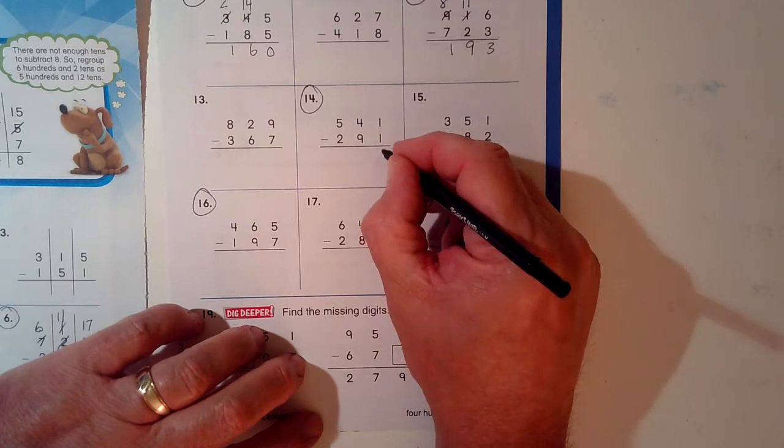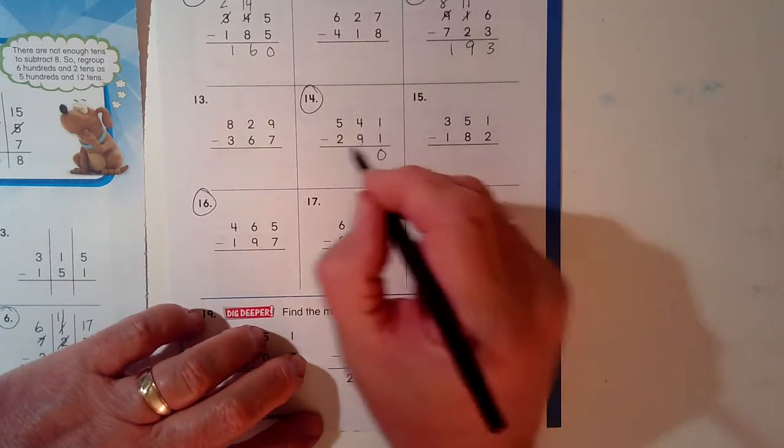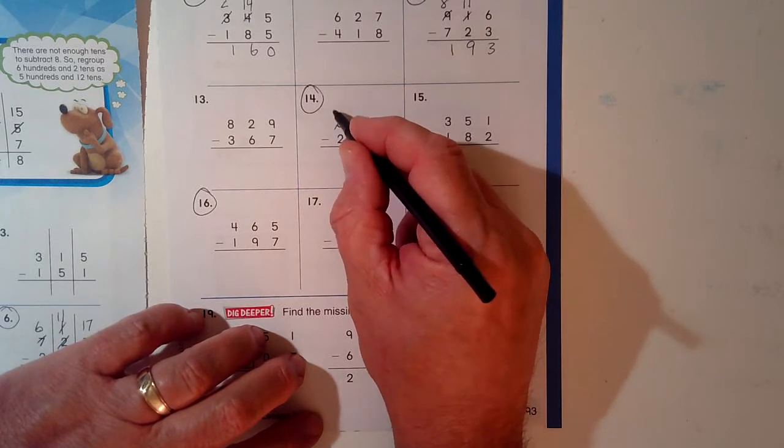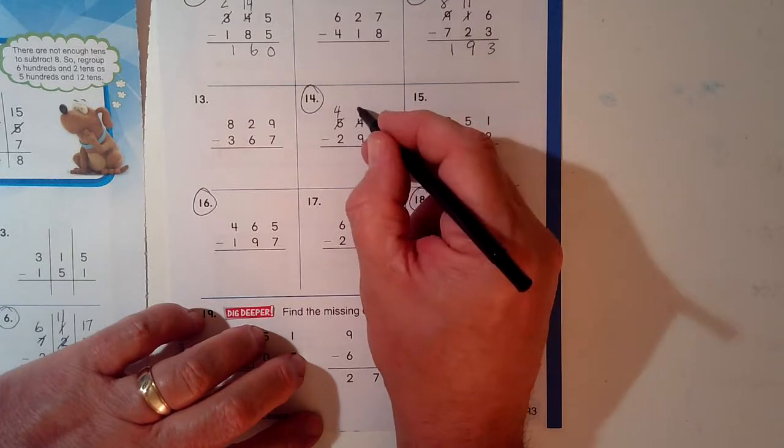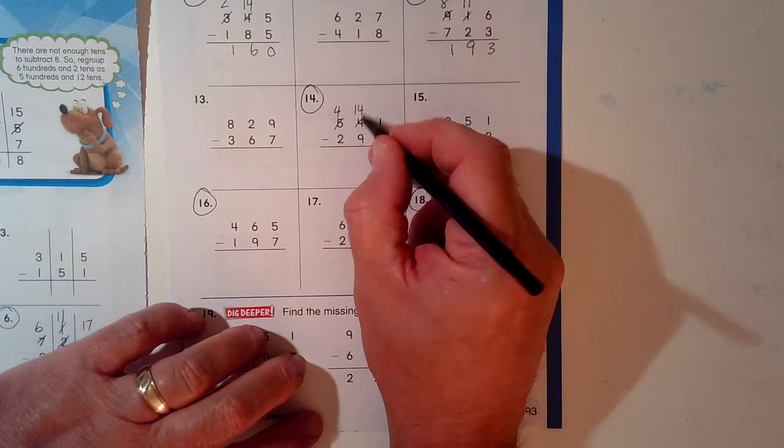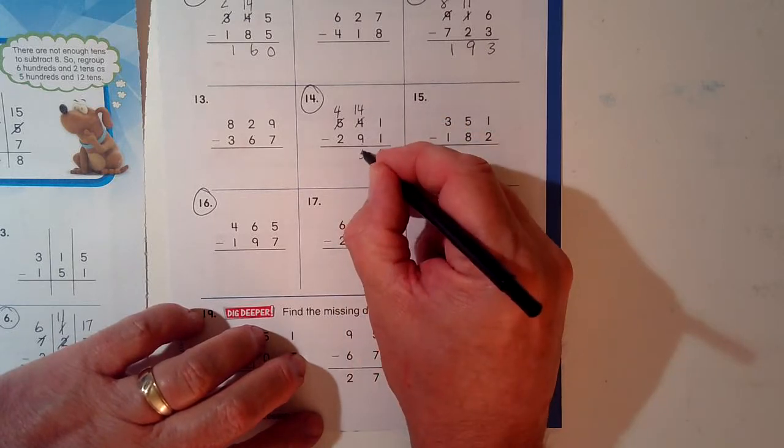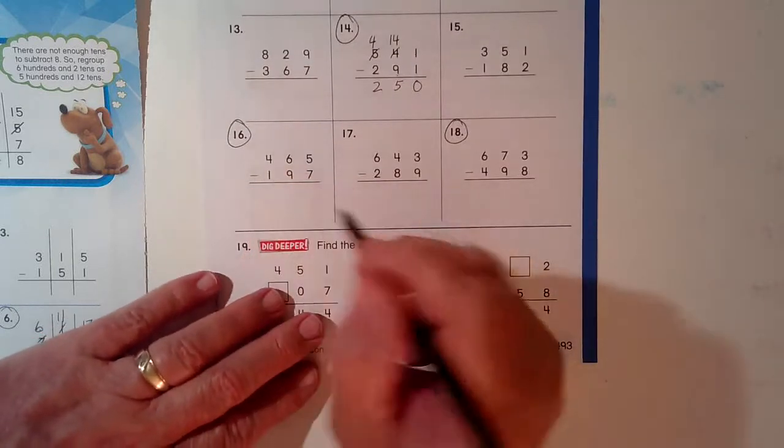1 minus 1, I can do it. There's nothing left. 4 minus 9, I can't do it. So I take one of these hundreds. There's 4. I take the 10 and I put it over here, right? 10 sets of 10. 14. 14 minus 9 is 5. 4 minus 2 is 2.